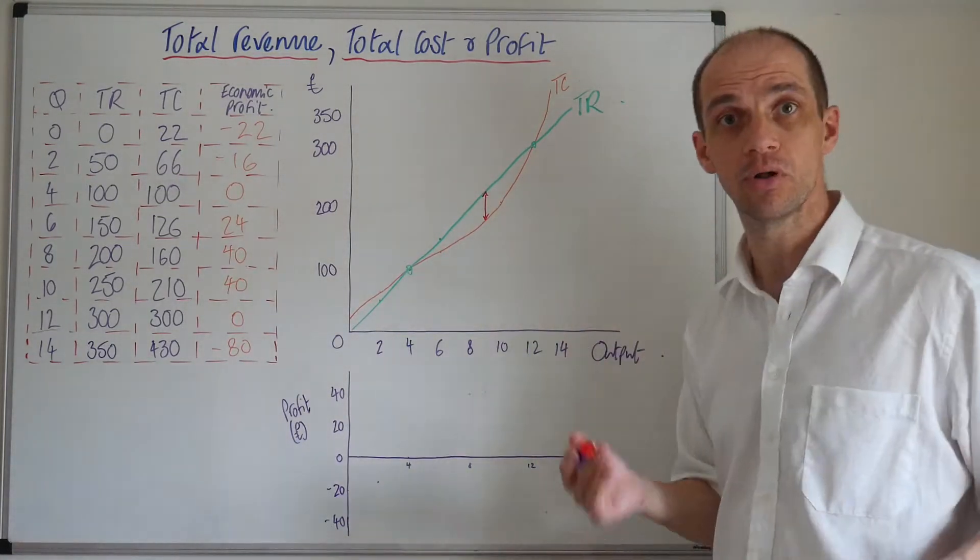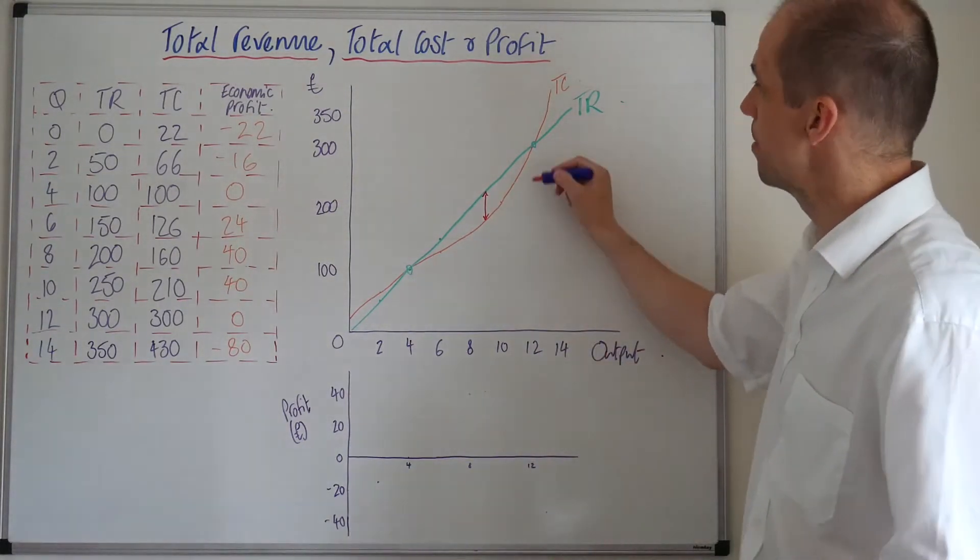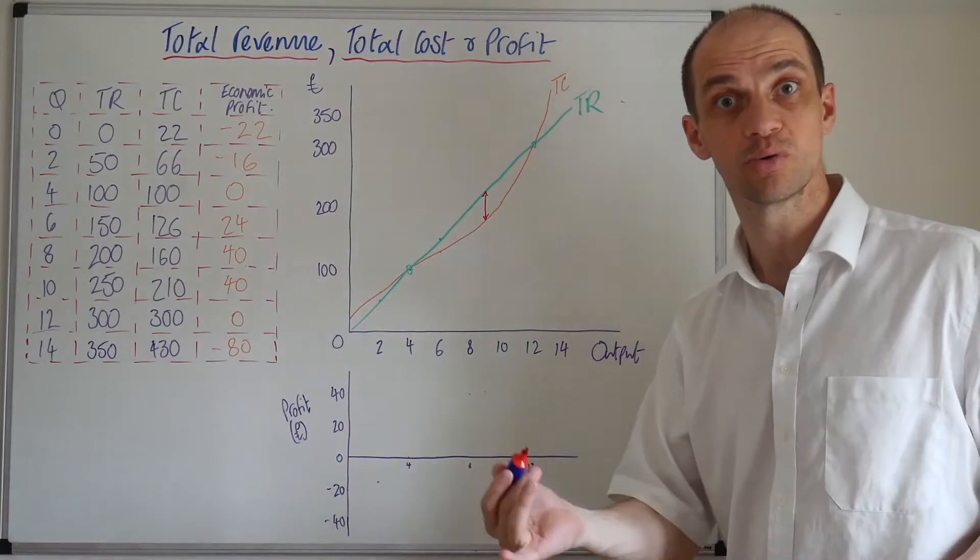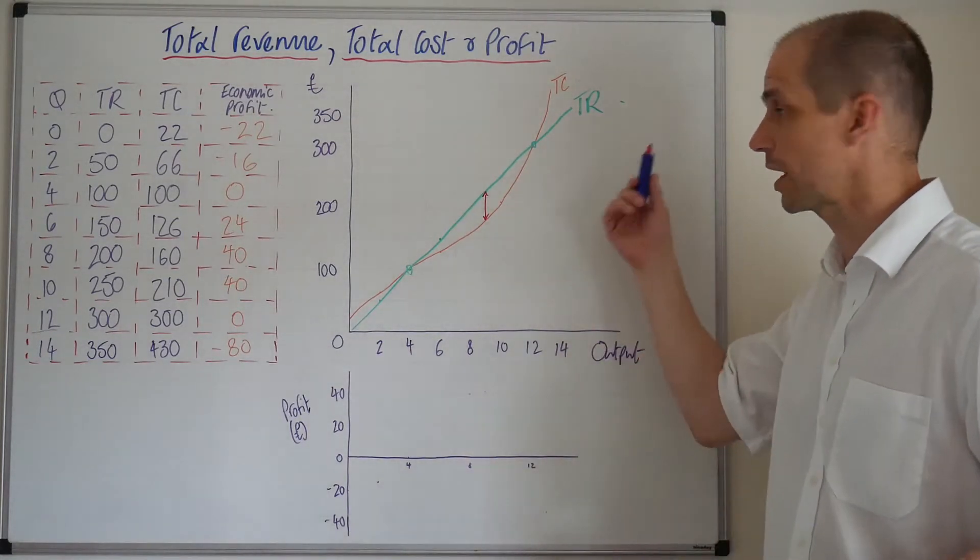So, at this level of output, that is our profit maximising level of output, but then total costs go on to actually exceed total revenue, and the firm makes economic losses.